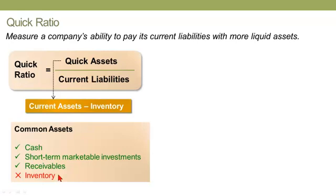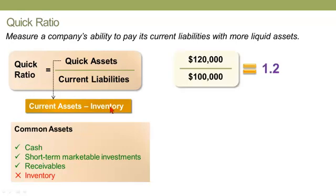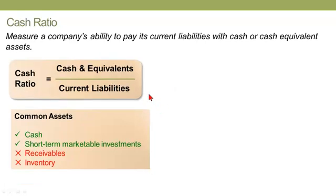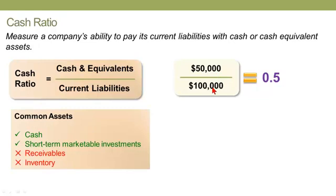So with quick assets of $120,000 and current liabilities of $100,000, the quick ratio is 1.2. We then zoom in further with the even more conservative cash ratio, which stress-tests the company for a crisis situation: what if it had to pay bills using only cash or marketable securities readily convertible to cash? The cash ratio has cash and equivalents in the numerator and current liabilities in the denominator. With $50,000 in cash and equivalents divided by $100,000 in current liabilities, the cash ratio is 0.5.